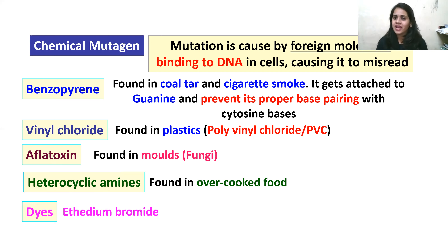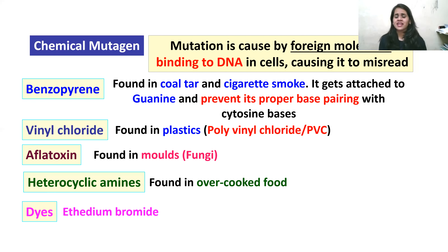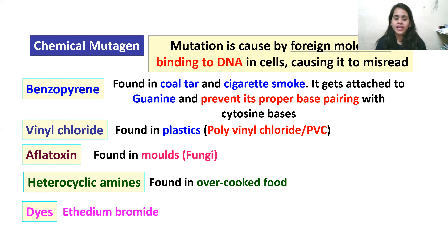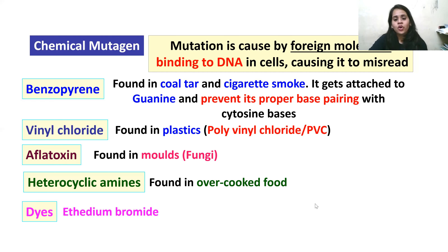Another chemical mutagen is vinyl chloride, found in plastics made of PVC — plastics are very harmful to our body and you should not use them to store anything, as they can produce chemicals that harm your body. Then there is aflatoxin, found in molds or fungi; heterocyclic amines, found in overcooked food; and dyes like ethidium bromide. These are all chemical mutagens that can lead to cancer.